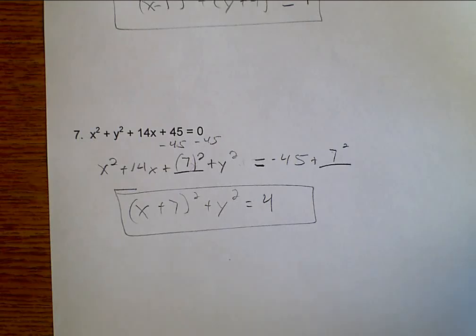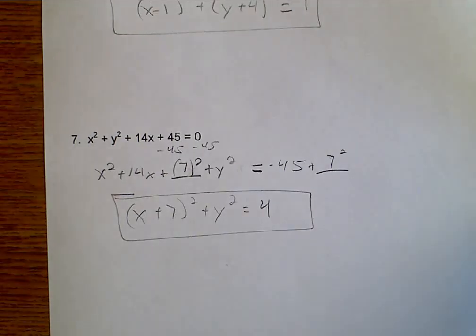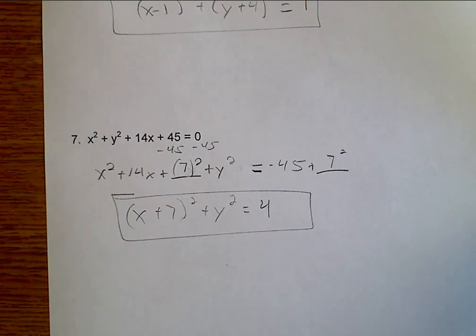We complete the square to get the general conic form of a circle. We will also be using variations of this for our parabolas, hyperbolas, and ellipses later on. Good luck and have a good day. Bye.